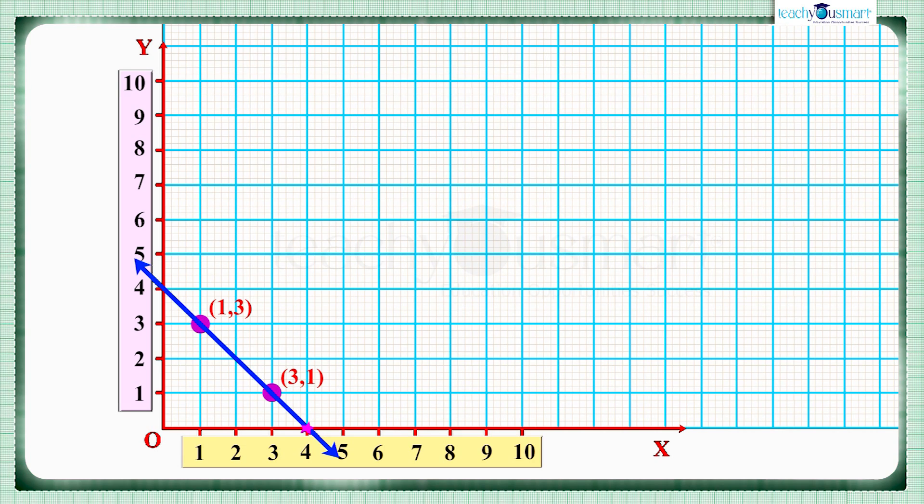Now we get a line AB which passes through the axis. Here we can see two points in the line which meet at the x-axis and y-axis.